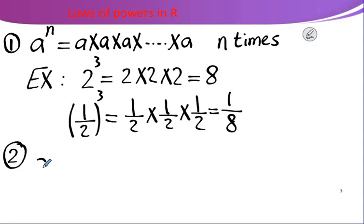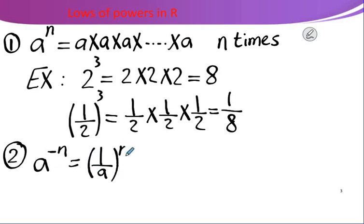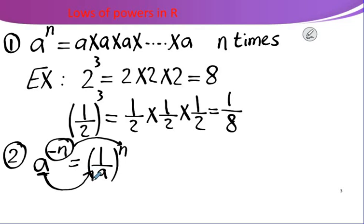Rule 2: A to the power negative n equals 1 over A to the power n. Here the power is negative, so to make it positive, we convert the base into its multiplicative inverse.